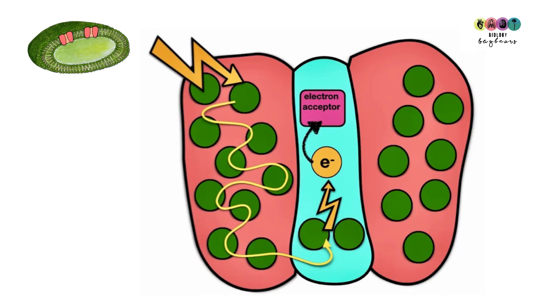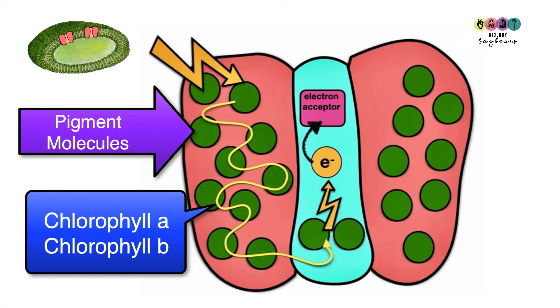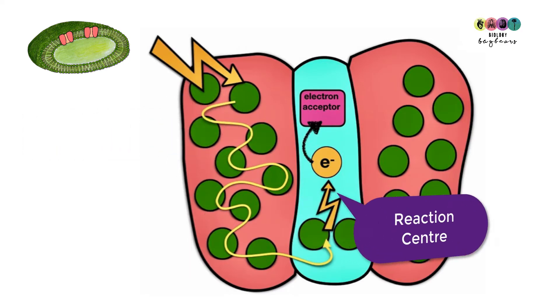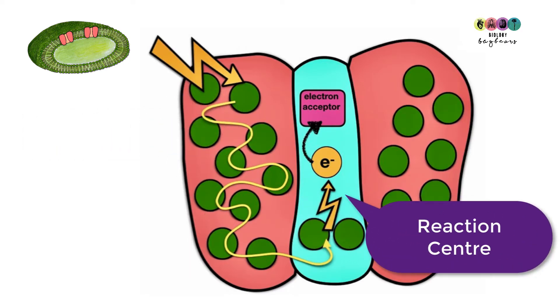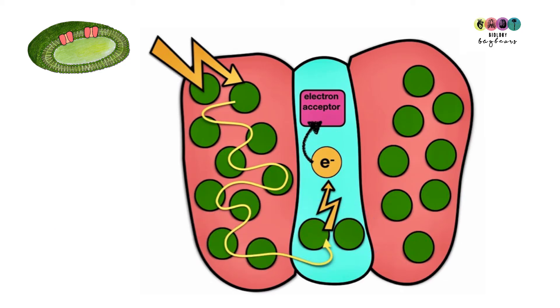A photosystem is basically this protein structure that contains all of these pigment molecules arranged in just the right way so that the maximum amount of light energy is absorbed. There are many different types of pigment molecules, chlorophyll A and chlorophyll B being two very important ones. Key to the photosystem is the reaction center, which has special chlorophyll molecules called reaction center chlorophylls. When light energy is passed to the reaction center chlorophyll, electrons can get energized and these electrons get picked up by an electron acceptor molecule.